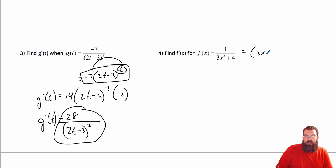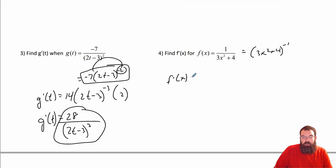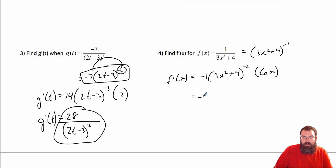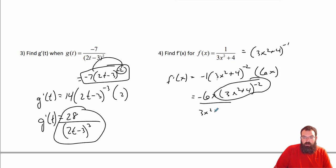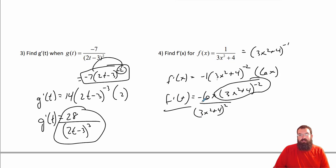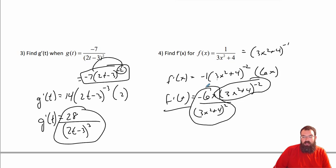This is another way you can write this — that is (3x² + 4) to the negative 1. Find the derivative: bring down the negative 1, keep the inside the same, subtract 1 from that, multiply by the derivative of the inside which is 6x. So we get negative 6x times (3x² + 4) to the negative 2, or you can write it as negative 6x over (3x² + 4)². Either way is fine for free response or multiple choice.